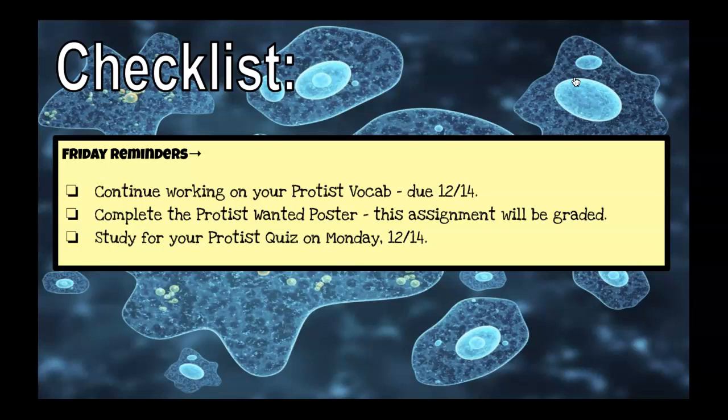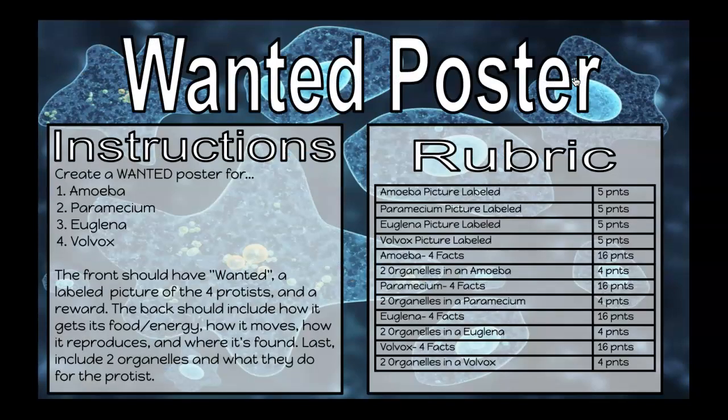Today we're going to be doing a protist wanted poster — it will be graded. The instructions say to create a wanted poster that incorporates an amoeba, a paramecium, euglena, and volvox. Back in the day, before technology, they would print wanted posters with a criminal's face and all kinds of information about where you could find the person. So we're creating a wanted poster for our four protists.